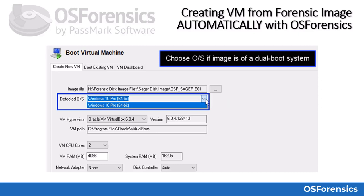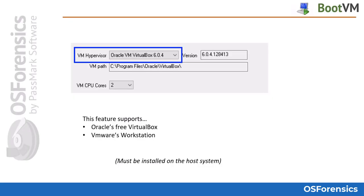OS Forensics will determine the operating system, or systems if it's a dual boot or multi-boot type of system. If more than one bootable operating system is discovered, you can select which you choose to boot from. Next, you will need to choose your VM software. OS Forensics supports both VM Workstation and the open-source VirtualBox by Oracle.